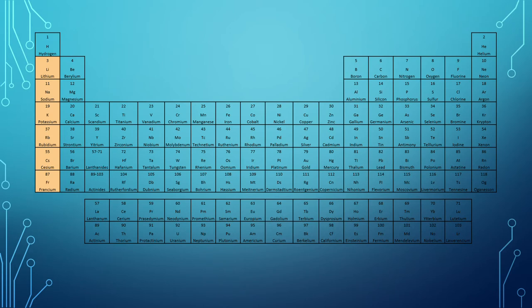Group 1 elements are located at the left side of the periodic table in the first column. These elements cover from the second row up to the seventh row of the periodic table.